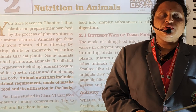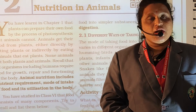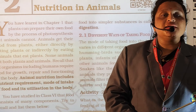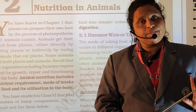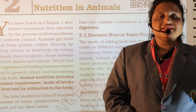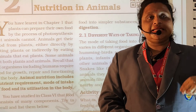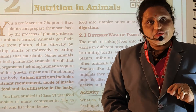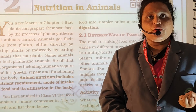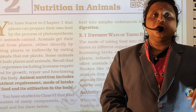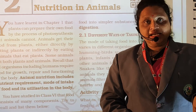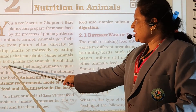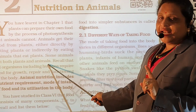In animals there are also three types: herbivorous, carnivorous, and omnivorous animals. Herbivorous animals eat only plants. Carnivorous animals eat other small animals. Omnivorous animals eat both plants and animals.